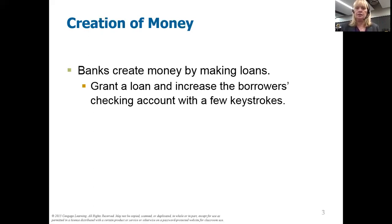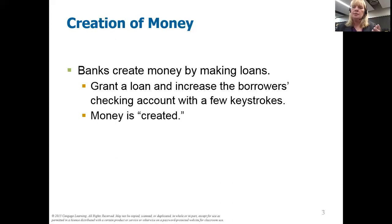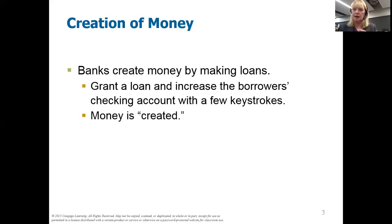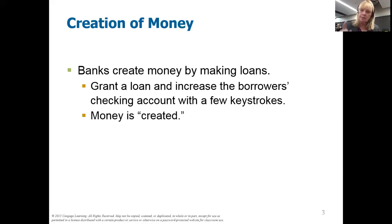Banks grant a loan and increase the borrower's checking account with a few keystrokes — and money is created. Let me make sure that's clear. I take a deposit to the bank, so there's $100 in my checking account. The bank takes that $100, sets aside some reserve, and loans $90 to you. You take that money and put it into your bank account. So now the bank is showing $90 in your account and $100 in my account — that's $190. Since total bank deposits are a component of M1, when we increase deposits from $100 to $190, we've just increased the money supply.